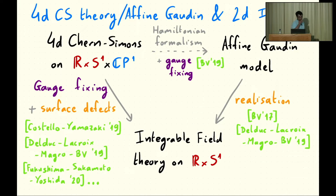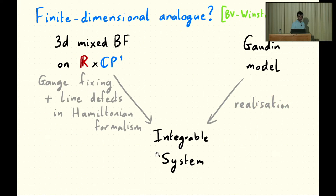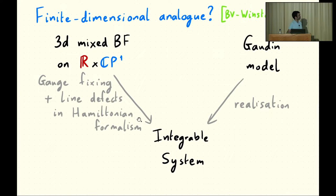The motivation for this work was to understand what is the analog of this picture if I replace the affine Gaudin model by a finite Gaudin model, which is supposed to describe not integrable field theories, but integrable systems of finite dimension. The finite dimensional analog uses 3D mixed BF theory on R cross CP1 in the same way as 4D Chern-Simons to construct such Gaudin models.